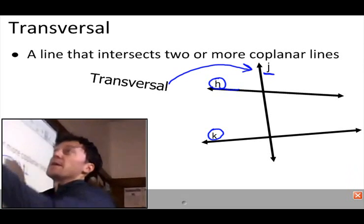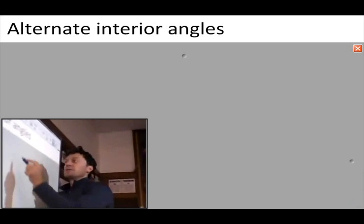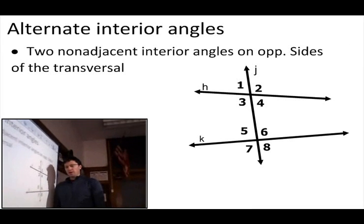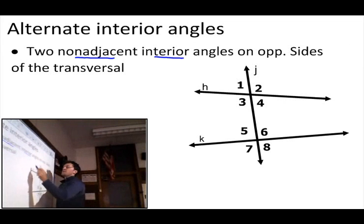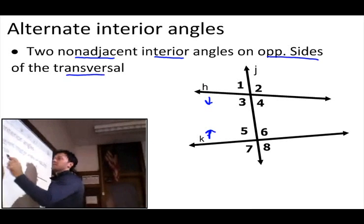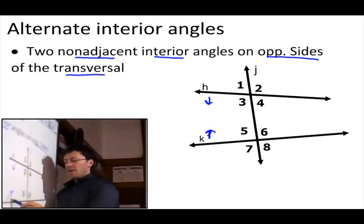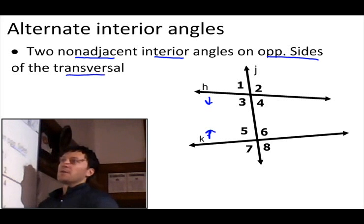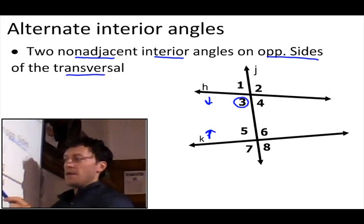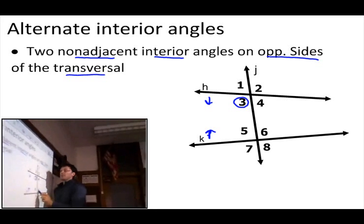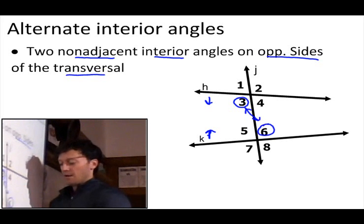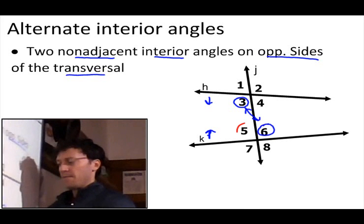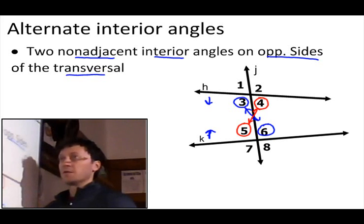We're going to talk about all the different angles they make. Alternate interior angles are two non-adjacent angles that are interior — on the inside of the lines being intersected — and on opposite sides of the transversal. All interior angles are 3, 4, 5, and 6. Looking at angle 3, its non-adjacent angles are 5 and 6, and the one on the opposite side of the transversal is 6. So 3 and 6 are alternate interior angles, and 4 and 5 are also alternate interior angles.